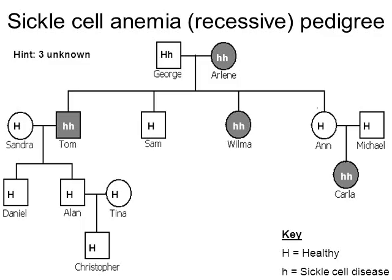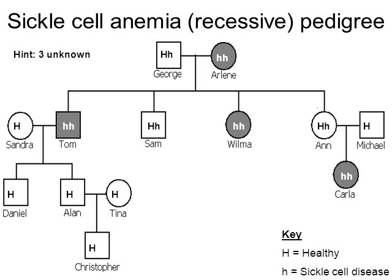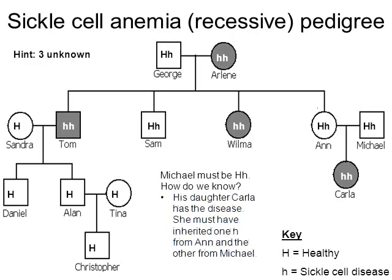Sam and Anne must also be heterozygous. The clue is their mother Arlene — she has two lowercase h's, so every child born from Arlene gets a lowercase h from her. Her four children are Tom, Sam, Wilma, and Anne. Michael must also be heterozygous because his daughter Carla has the disease — she inherited one lowercase h from her mother Anne and the other from her father Michael.